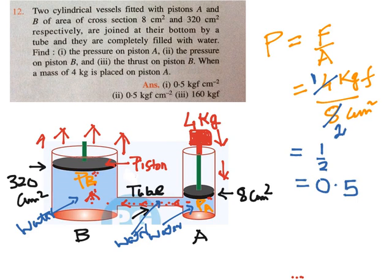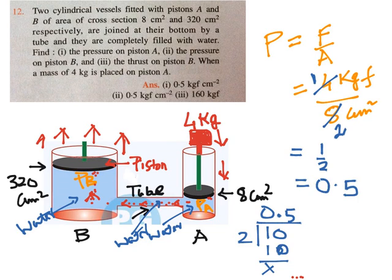So dividing 4 by 8 gives one half, which is 0.5. The unit is kgf per centimeter square. That answers the first question — PA = 0.5 kgf/cm².